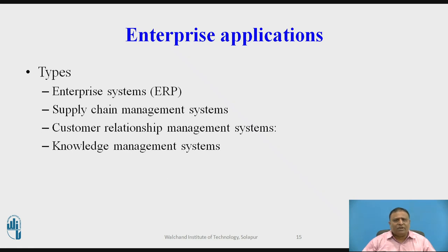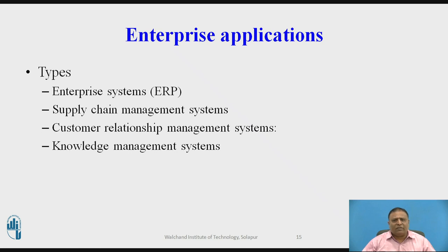Knowledge management systems capture knowledge and experience on how to create, produce, and deliver products and services, and make that knowledge available whenever and wherever it is needed. They support processes for acquiring, creating, storing, distributing, applying, and integrating knowledge, and link internal knowledge to external knowledge. Knowledge management systems include enterprise-wide systems for managing documents, graphics, and other digital knowledge objects, such as directories of employees with expertise.